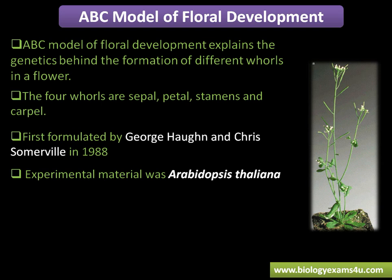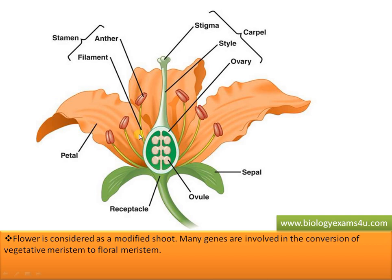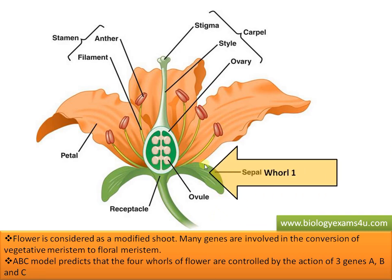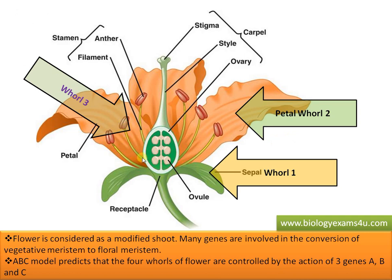Let us have a look at the different whorls of a flower. A flower is considered as a modified shoot, and a number of genes are involved that are responsible for the conversion of the vegetative meristem to floral meristem. The ABC model predicts that these four whorls are controlled by a set of genes designated as A, B, and C classes. The first whorl is the sepal, the second is the brightly colored petal, the third is the stamen comprising filament and anther, and the fourth is the carpel comprising stigma, style, and ovary.